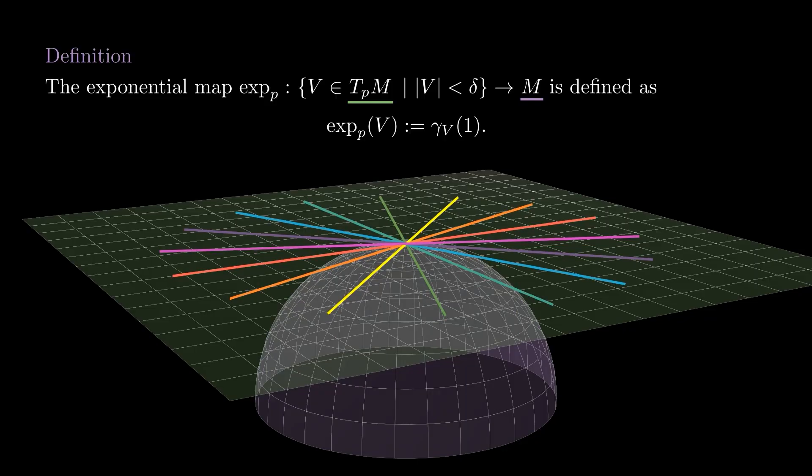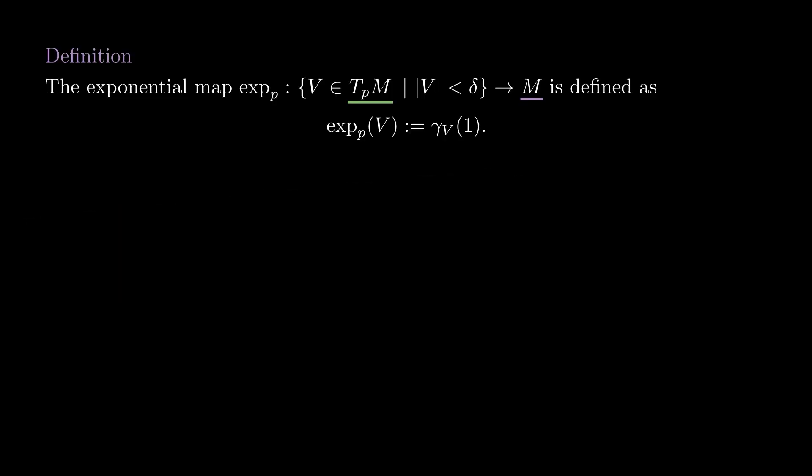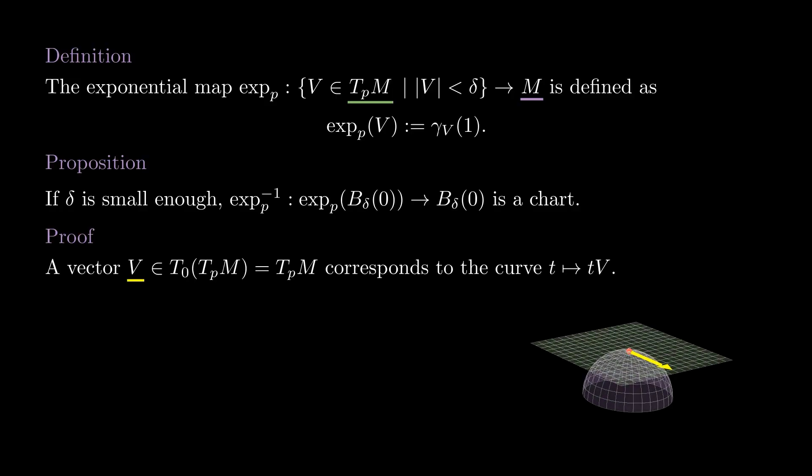We now show that the inverse of the exponential map is a chart after maybe restricting it to a smaller ball. This will be a consequence of the inverse function theorem. Notice that we can identify the tangent space to the tangent space at the origin with the tangent space itself. This is because every vector space can be naturally identified with its own tangent spaces by using lines.